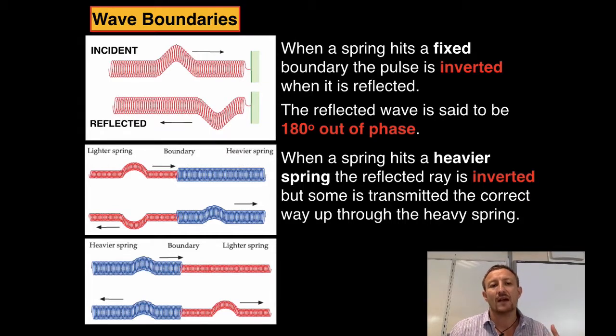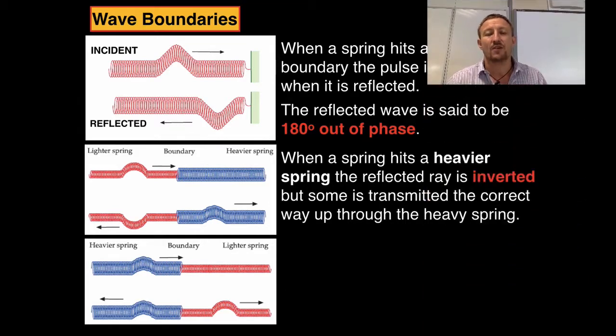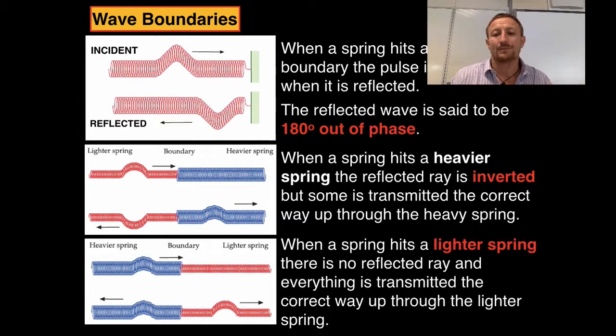And finally if we've got a wave passing through a heavy spring going into a lighter spring, what we notice is that some of the wave energy is passed through the lighter spring but it's the correct way up, and some of the wave is passed back through the heavy spring and that is also the correct way up as we can see here in the final diagram.